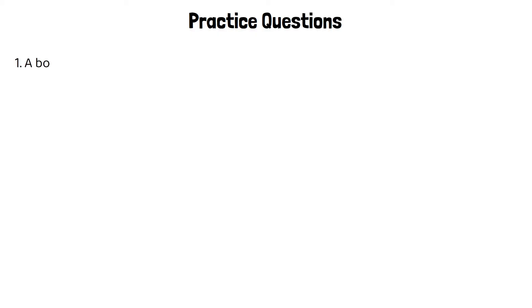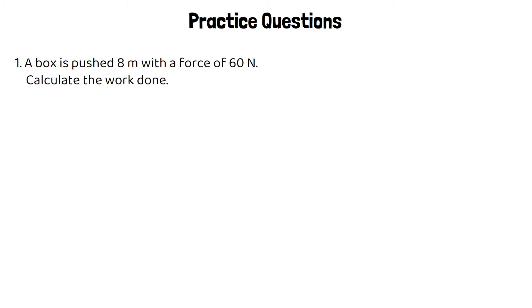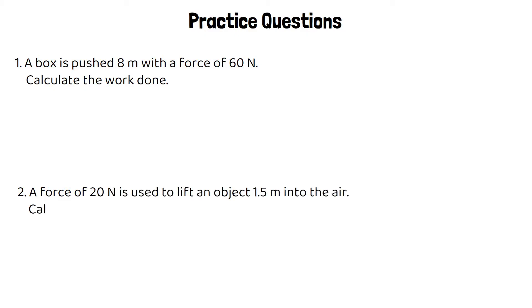Here are a couple of practice questions using this equation. First: a box is pushed 8 meters with a force of 60 newtons — calculate the work done. Second: a force of 20 newtons is used to lift an object 1.5 meters into the air — calculate the work done. Pause the video and have a go at these questions.